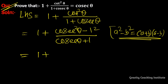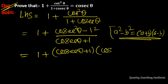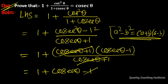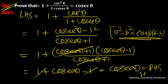So it becomes (cosecθ + 1)(cosecθ - 1) upon (1 + cosecθ). The (1 + cosecθ) terms cancel, leaving cosecθ, which equals RHS. Hence proved.